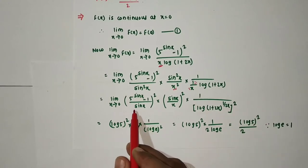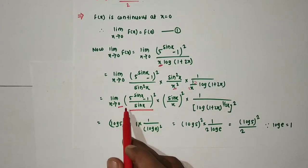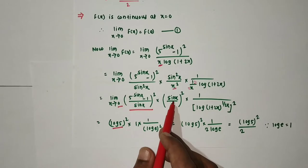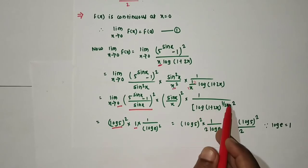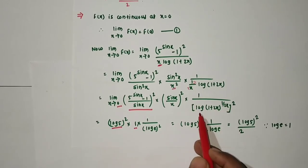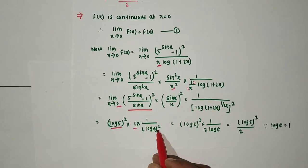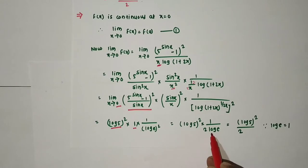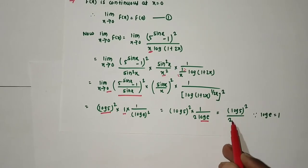After separating: limit as x tends to 0 of [(5^sinx - 1)/sinx]² × [sinx/x]² × 1/log(1+2x), with a factor of 2 adjusted. We know limit as x→0 of (a^sinx - 1)/sinx = log a, so here with a = 5 this gives (log 5)². Also limit sinx/x = 1, so that factor is 1. The remaining term gives log e = 1, with the factor of 2 in denominator: so we get (log 5)² × 1 × 1/(2 log e) = (log 5)²/2.